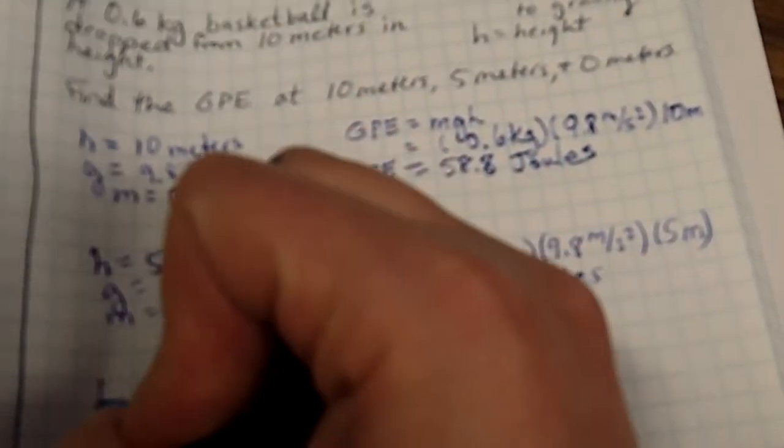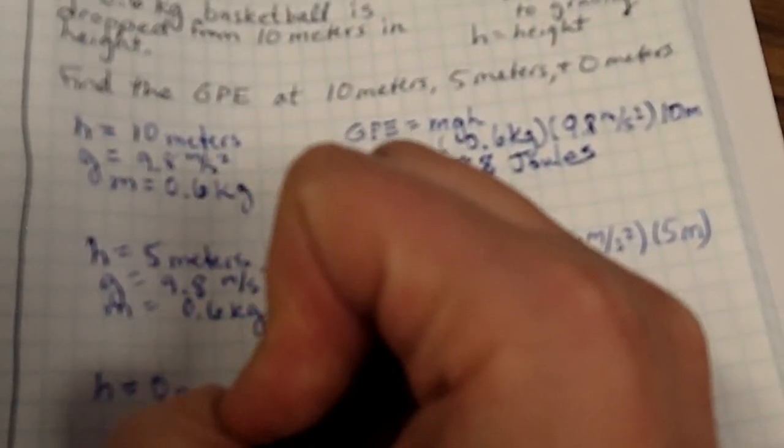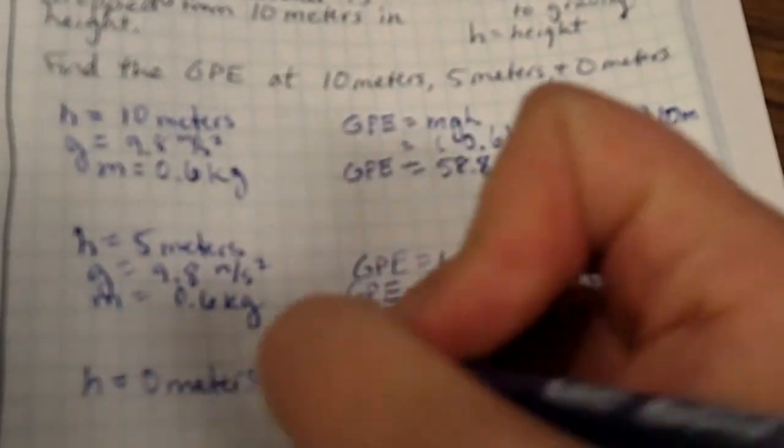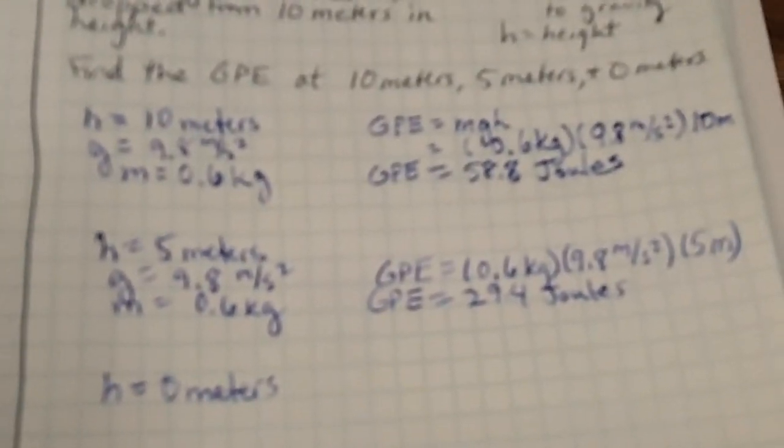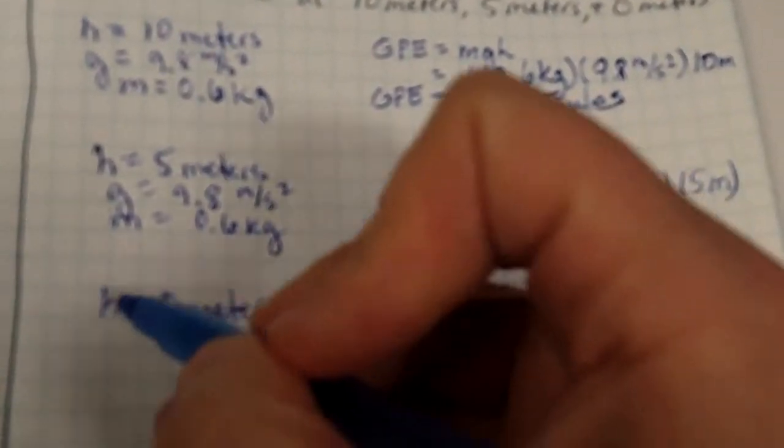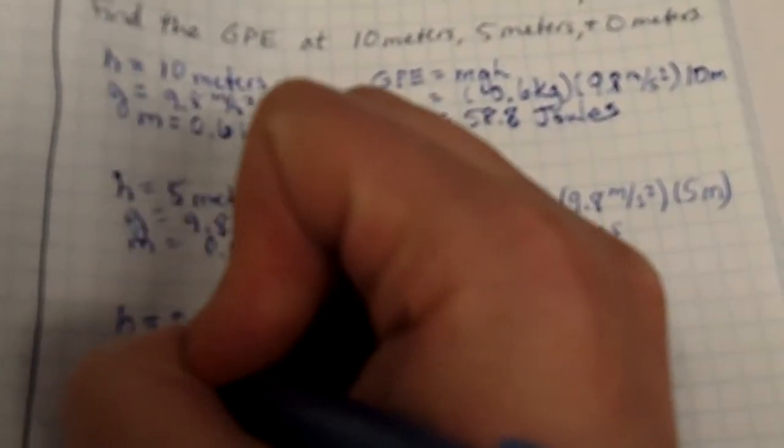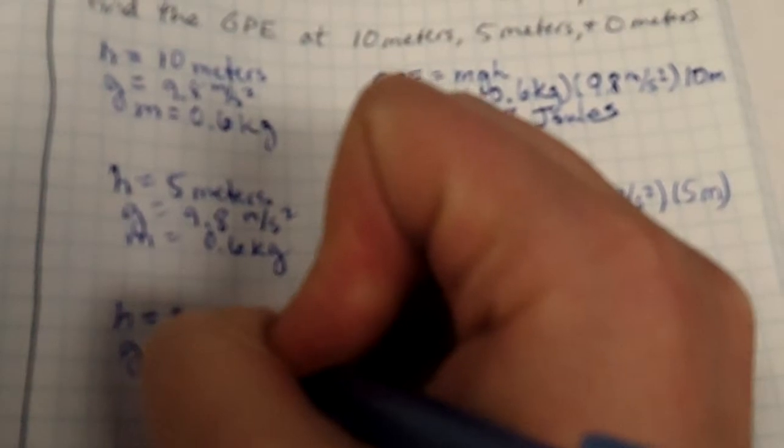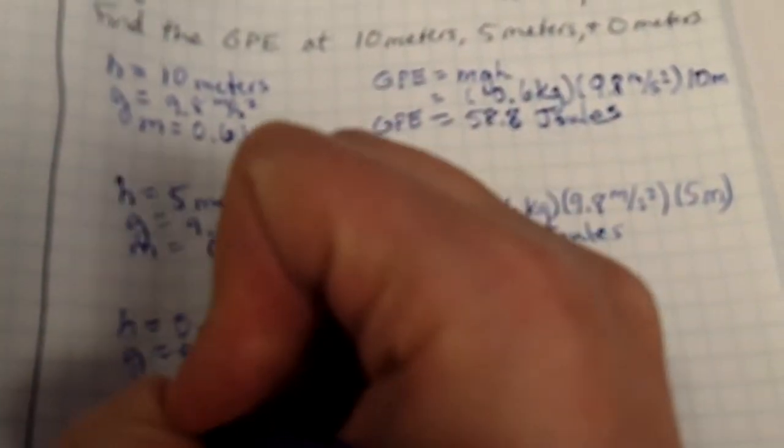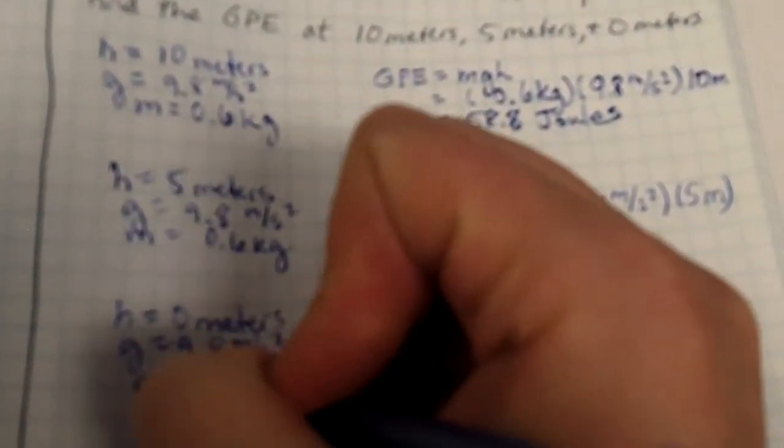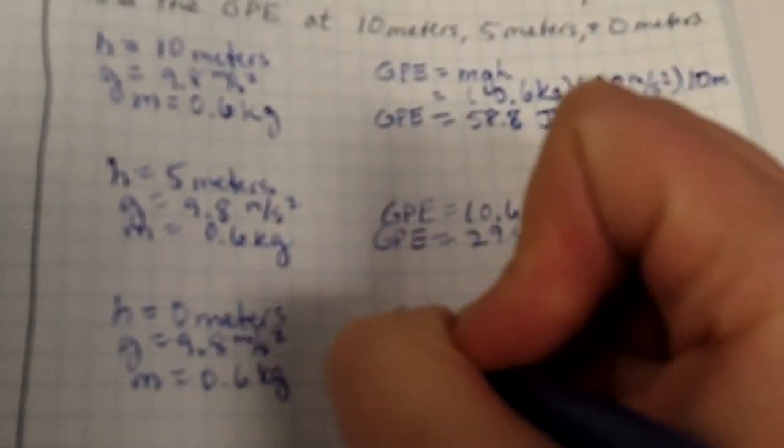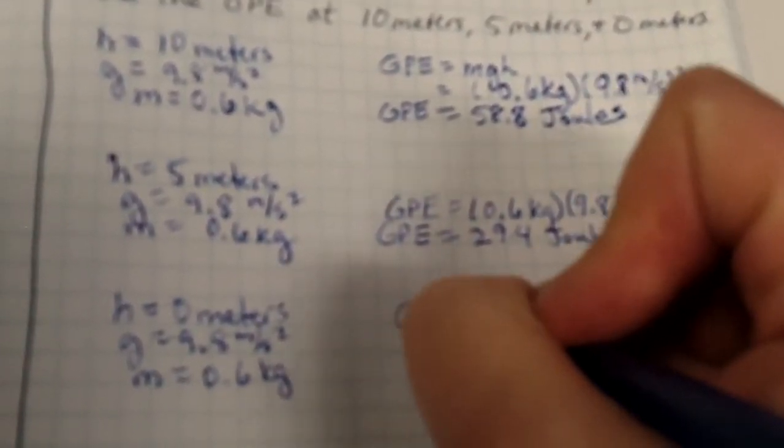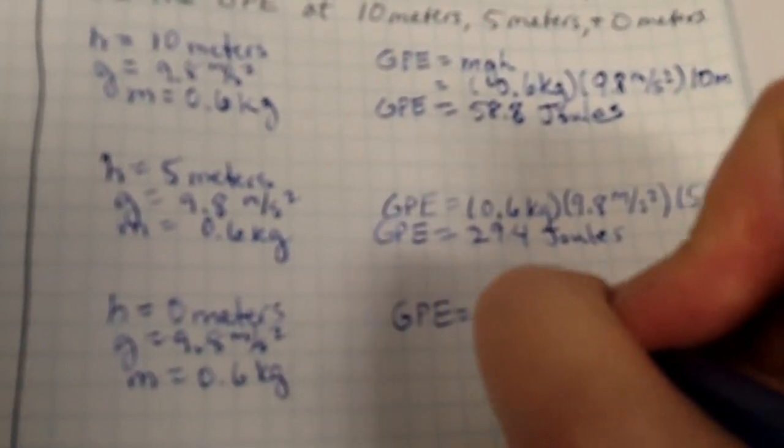Then we take a look at the height is 0 meters. But you guys can guess what the energy is going to be at 0 meters. But let's calculate it as well. We have the same G is 9.8 meters per second squared. And the same mass is 0.6 kilograms.